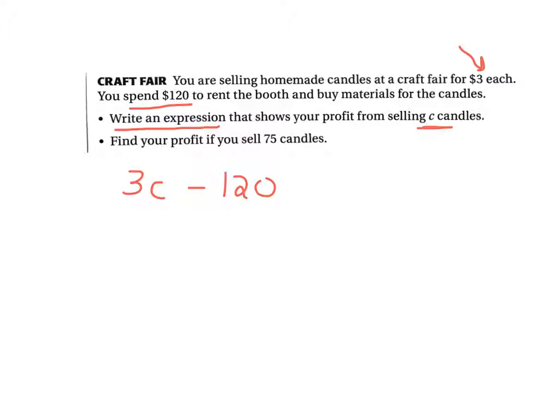It says find the profit if you sell 75. I'm just going to substitute 75 in for the C. Everybody knows 3 times 75 is $225 minus the $120. And when you subtract that, you would end up with $105. So your profit, your net profit, is going to be $105 after you sell 75 candles, subtracting out your booth fee.